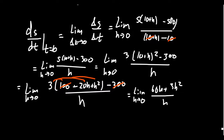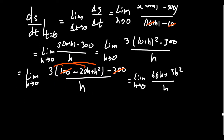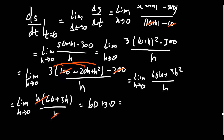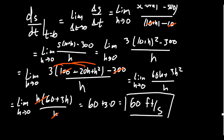We still have division by zero in the denominator, so we factor the numerator: everyone in the numerator is divisible by H. That gives us H(60 + 3H) over H, and we cancel the H. We're still taking the limit as H approaches zero, but division by zero is no longer a problem. Using continuity, the limit as H approaches zero of (60 + 3H) = 60 + 3(0) = 60. That is, 60 feet per second — exactly what we were estimating.